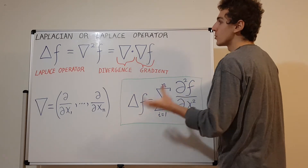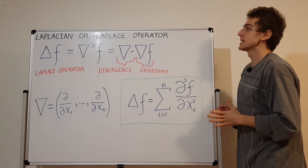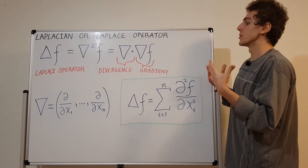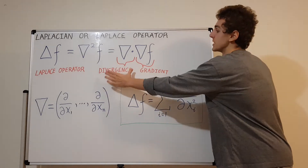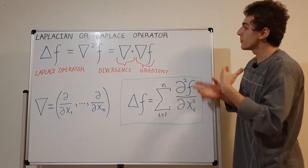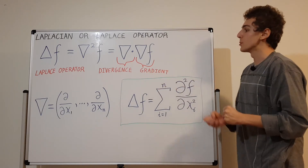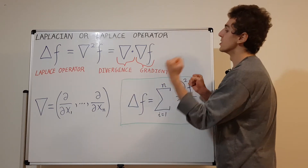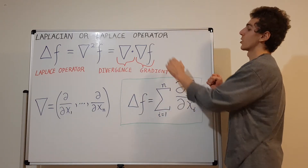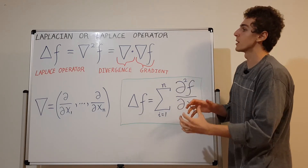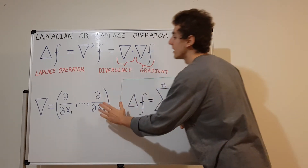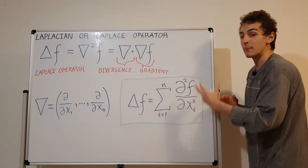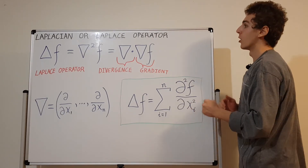To summarize what we've covered: the Laplacian operator, along with the divergence and gradient from vector calculus. We talked about what the gradient and divergence represent, and then combined them — the divergence of the gradient of some function F equals the Laplace operator acting on F. We also saw the del operator representation and the alternative summation notation.